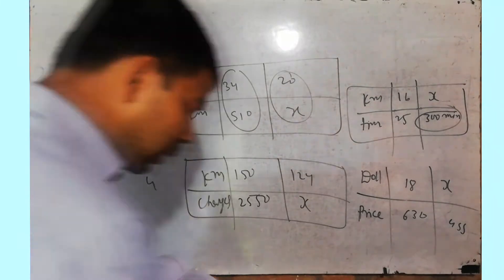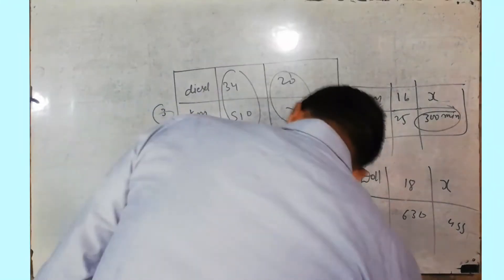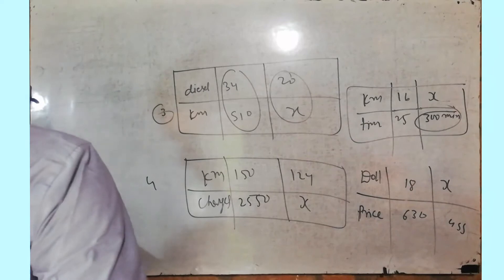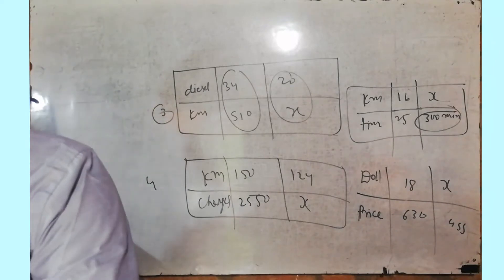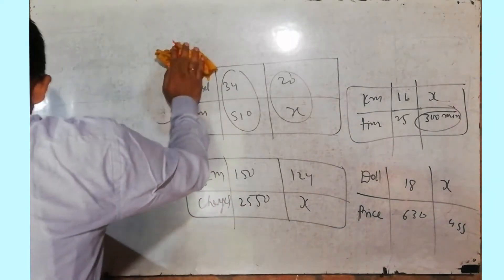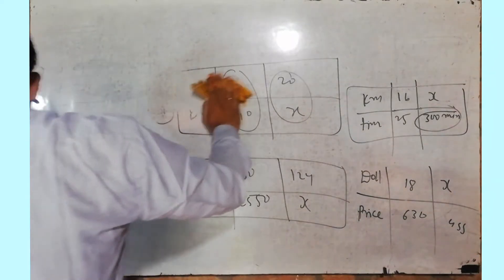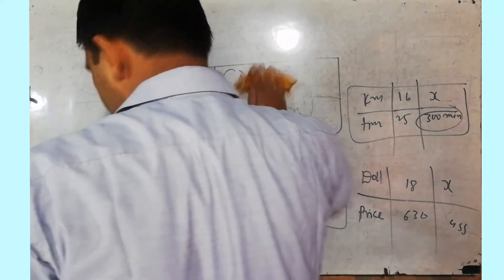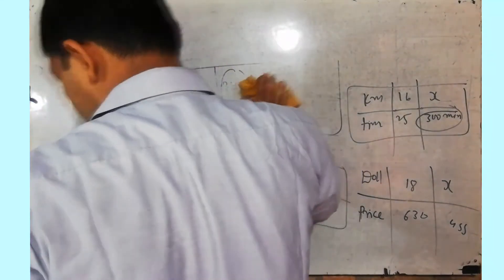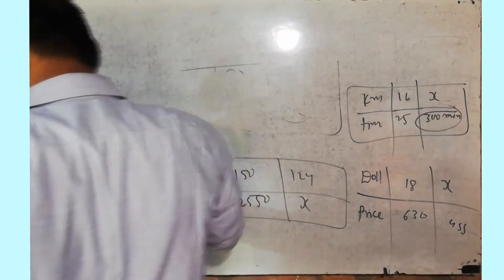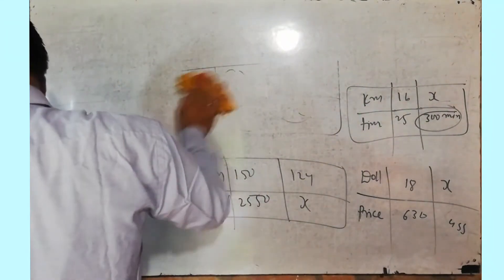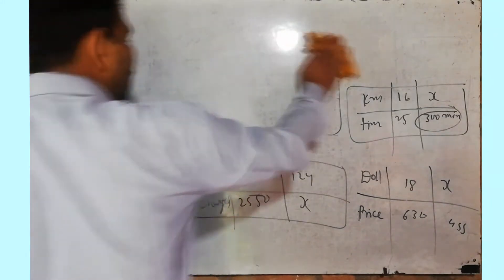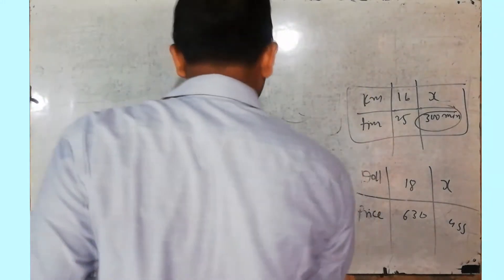Question number 9: if 9 kg of sugar costs 238.5 rupees, how much sugar can be bought for 371 rupees? Simple — 9 kg for that price is a direct proportion question. Put it in a table and solve.